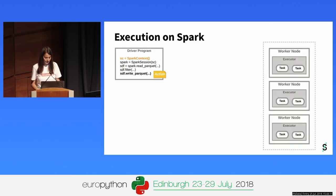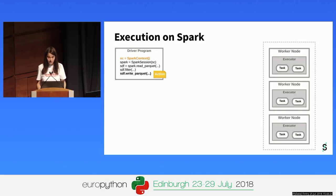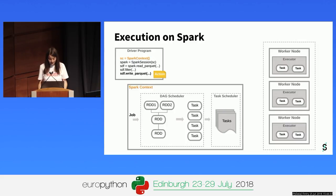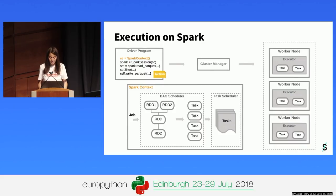Spark follows a master-slave architecture with a central coordinator called the driver and several distributed workers called executors. The driver instantiates the Spark context, which is in charge of breaking down the processing job into tasks and creating the execution plans. Once Spark has these execution plans, the task scheduler within the Spark context asks the cluster manager for executors to run these tasks. Spark has its own cluster manager and also supports other cluster managers such as Hadoop YARN.